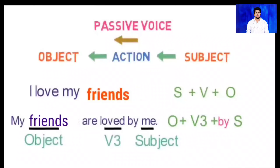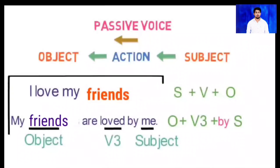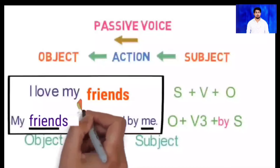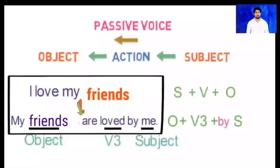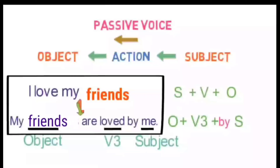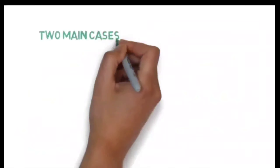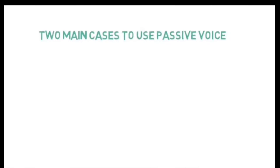Please note that both sentences — 'I love my friends' and 'My friends are loved by me' — are exactly the same in meaning. Now you might be thinking: if both sentences are identical in meaning, which one should you use? Generally we use active voice only. So the next question is: when do we use passive voice and what is the need for it?